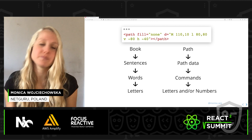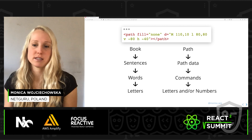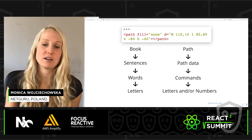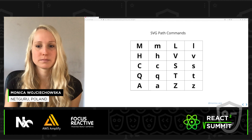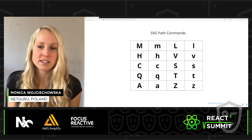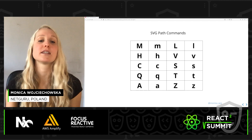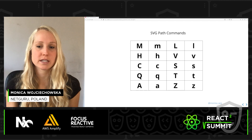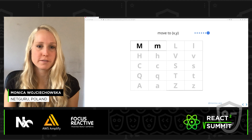Each command is represented by a set of letters and numbers which tell us different things about that command. SVG gives us 10 different commands — 10 different letters — and each command comes in two variants: uppercase and lowercase. An uppercase letter specifies absolute coordinates on the page, and a lowercase letter specifies relative coordinates. Our first command, M, means move to — basically pick up a pen and put it down in a certain location, specifying the X and Y position.